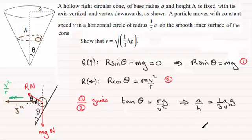Now we can rearrange this for v squared. Notice the a's will cancel out. And so if we rearrange this, we get v squared equals one third h times g. And from this we can get v. V equals the square root then of all of one third hg. And that's what we had to show.